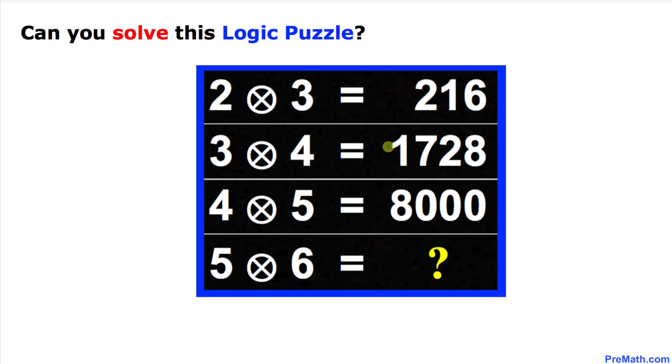Welcome to PreMath! In this video tutorial, we're going to solve this logic puzzle that involves this circled multiplication. Here's our puzzle: 2 and 3 produce 216, 3 and 4 produce 1728, and likewise 4 and 5 produce 8000.